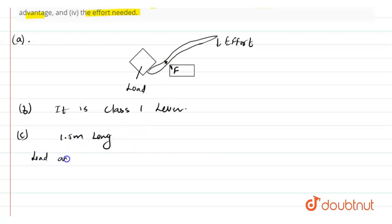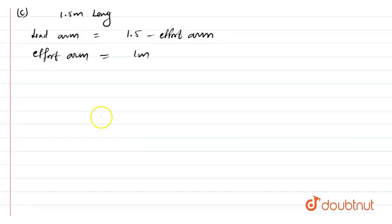Our load arm will be 1.5 minus effort arm. As we know our effort arm is 1 meter, so our load arm comes out to be 1.5 minus 1 which is 0.5 meter.